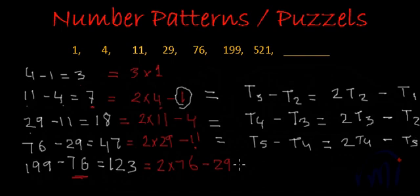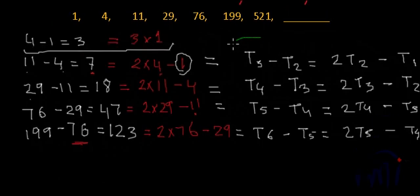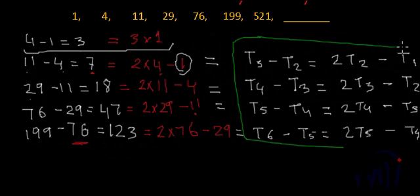So what logic can be concluded from here? If we see these expressions carefully, what can we write? We can write tn minus tn minus 1 is equal to 2 times tn minus 1 minus tn minus 2.